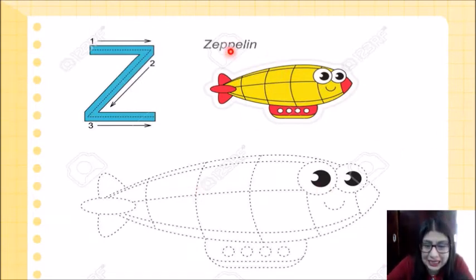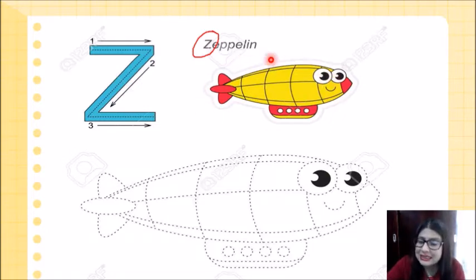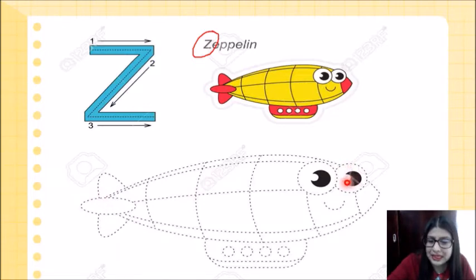Ahora, corazones, aquí nosotros tenemos un Zeppelin. ¿Sabes por qué? Porque Zeppelin se escribe con la letra Z. Y también aquí tenemos una imagen que está bien bonita, coloreada, súper precioso, ¿verdad? Y en la parte de abajo nosotros tenemos un punteado y en ese punteado se puede observar el mismo dibujo de arriba, ¿verdad? Lo que vamos a hacer es súper fácil. Tenemos que remarcar el punteado para darle forma a este Zeppelin.